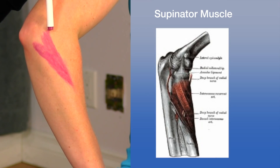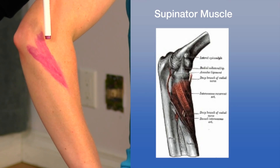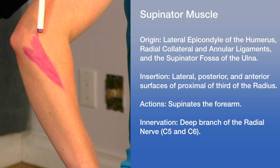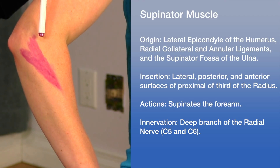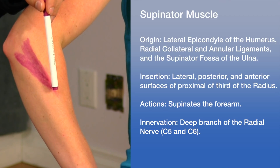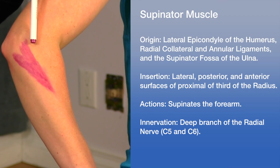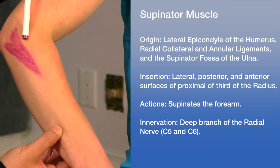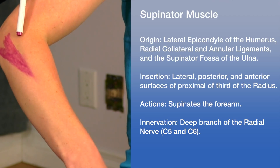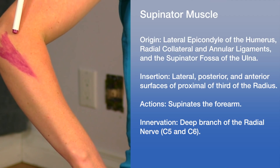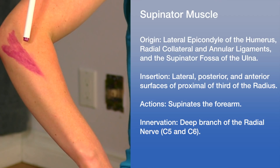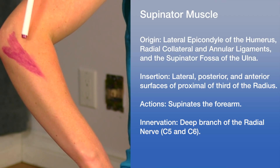The supinator muscle has two layers — a deep one and a more superficial layer. It originates from the lateral epicondyle of the humerus, the radial collateral and annular ligaments, and the supinator fossa and crest on the ulna. It inserts into the lateral, posterior, and anterior surfaces of the proximal third of the radius. Its action, as the name suggests, is to supinate the forearm, rotating the radius to turn the palm anteriorly. The muscle is innervated by the deep branch of the radial nerve, and because there are two layers, that nerve courses between them, creating a chance for peripheral nerve entrapment.